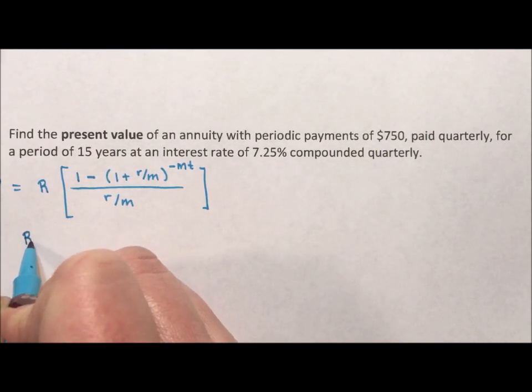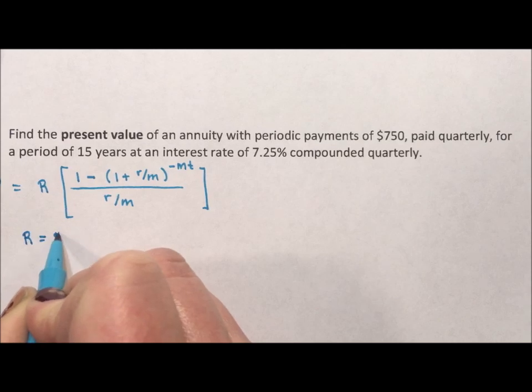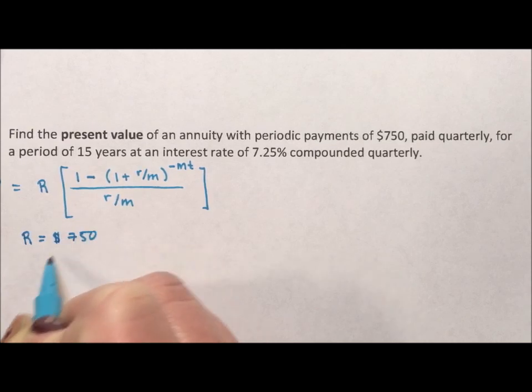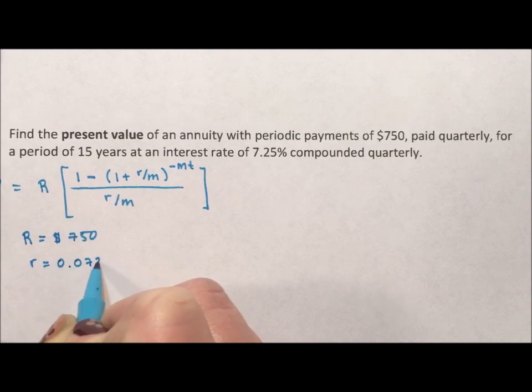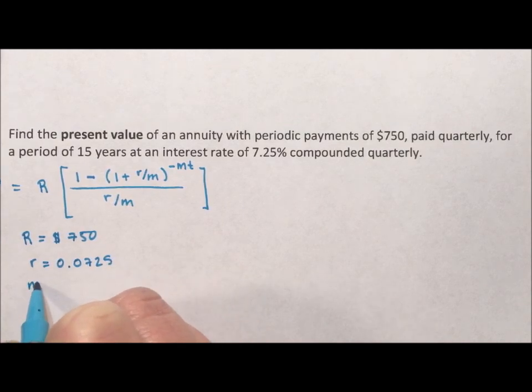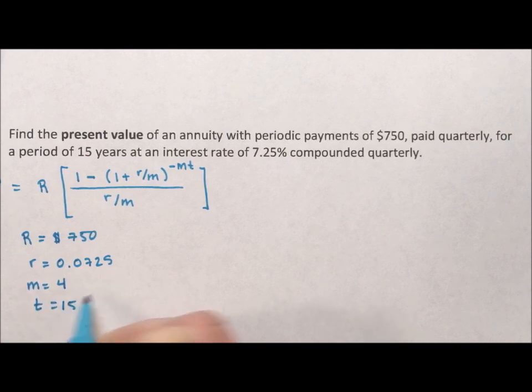So R, the periodic payment, is $750. The small r is our rate, which is 0.0725. The M is compounded quarterly, so that's 4, and the T is 15 years.